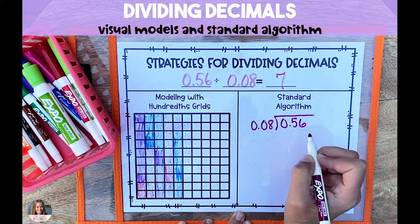In order to make our divisor a whole number, we're going to increase it by however many powers of 10 it takes to make it a whole number. The important thing though is that whatever you do to the divisor, you also have to do to the dividend.